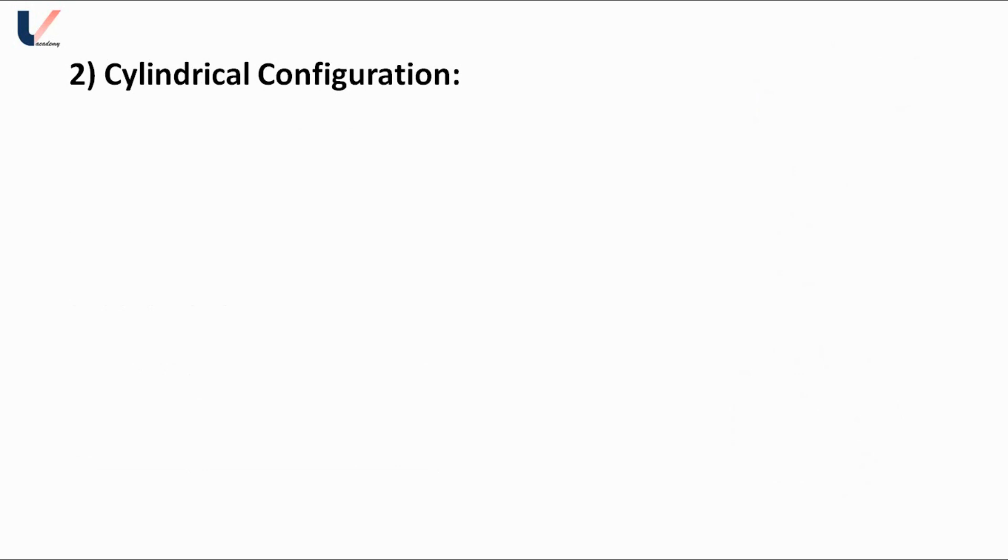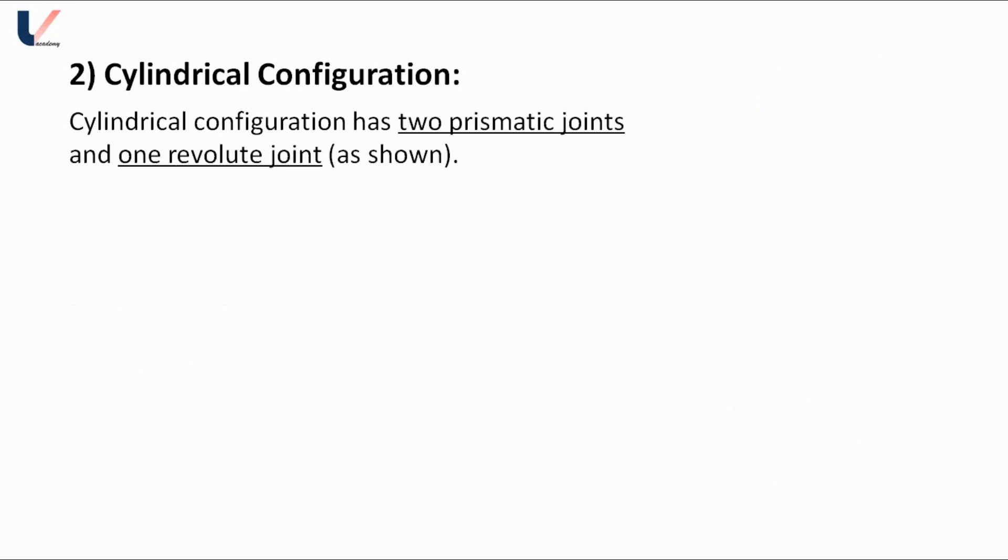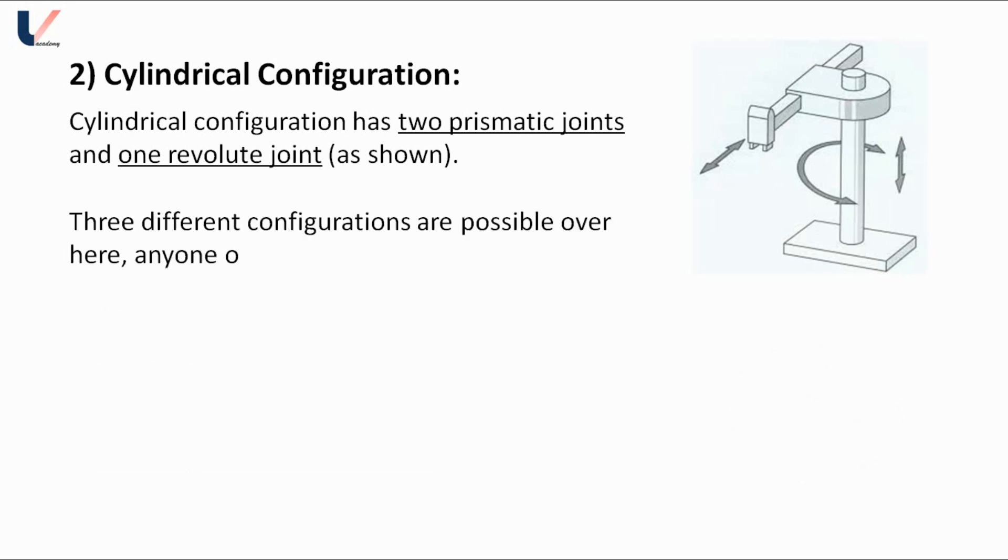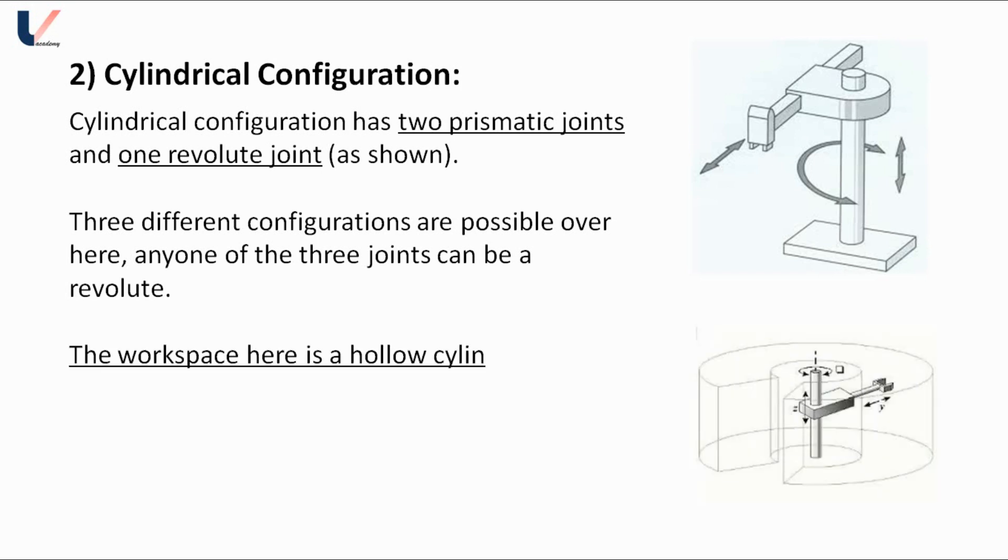In cylindrical configuration, one prismatic joint is replaced by one revolute joint, so it has two prismatic joints and one revolute joint as shown. Three different configurations are possible. Any one of the three joints can be a revolute joint. The workspace in cylindrical configuration is a hollow cylinder.